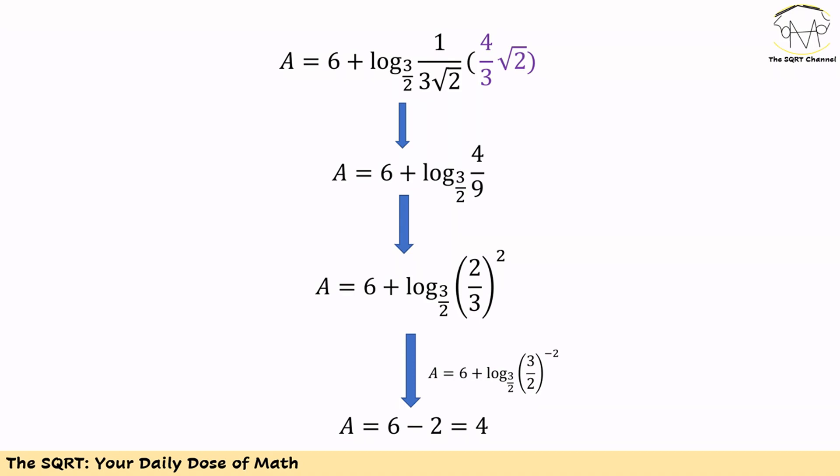Remember, we can write 4 over 9 as 2 over 3 squared, and 2 over 3 is the inverse of 3 over 2. So at the end, we have A equals 6 minus 2, which is 4. And that's our final answer.